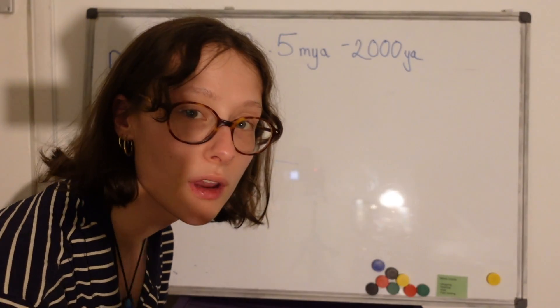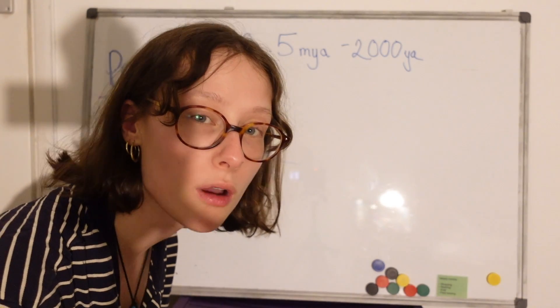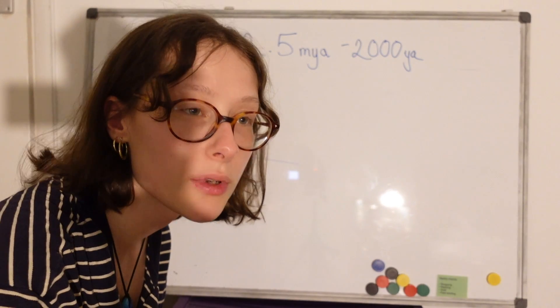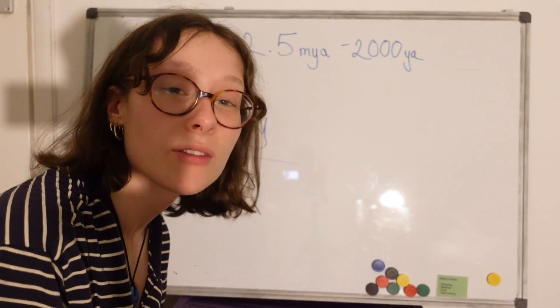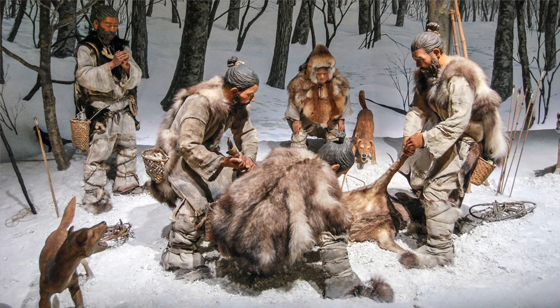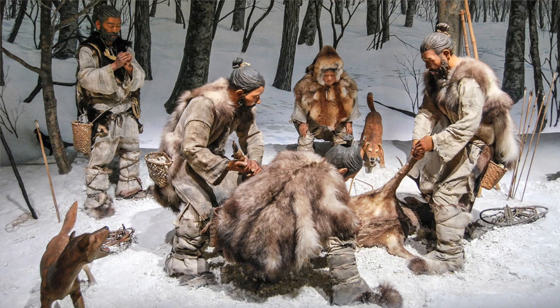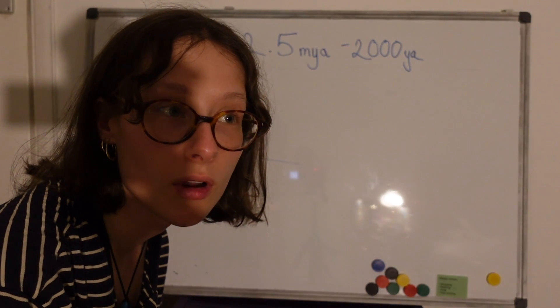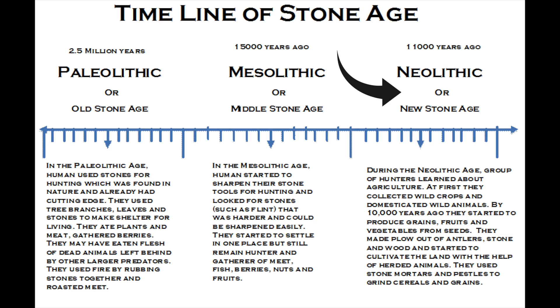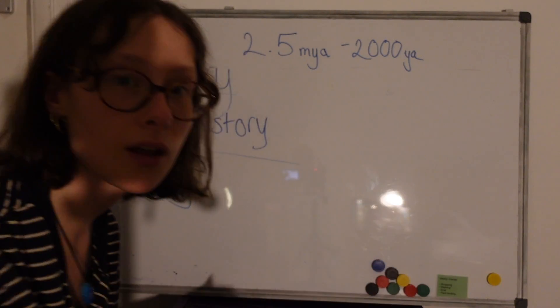There are obviously very varying dates for different parts of the world for when they stopped having their kind of prehistory. Like for example in Japan they were living as hunter-gatherers till about 2,000 years ago. However across much of Europe that kind of stopped around the neolithic. However we will get to that.